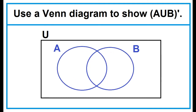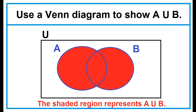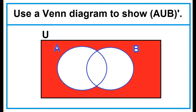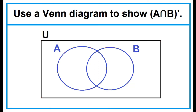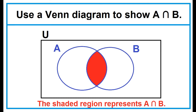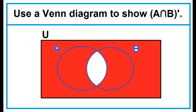Use a Venn diagram to show the complement of A union B. This is simply not A union B. So if this is your A union B, the complement is the region excluding A union B. Shade the region excluding A intersection B to represent its complement.